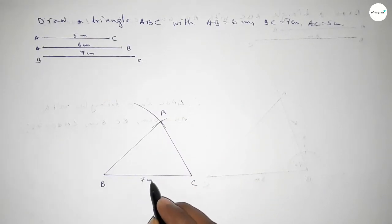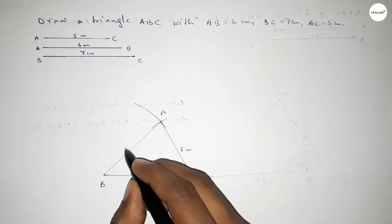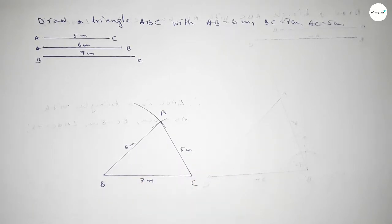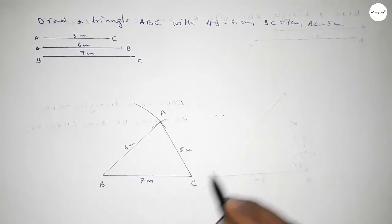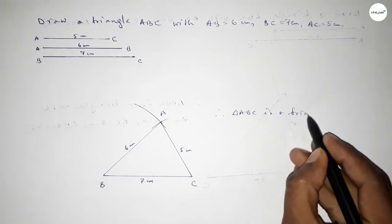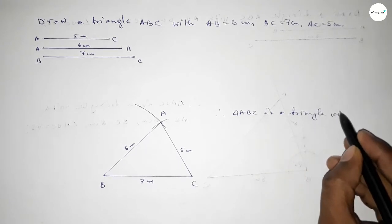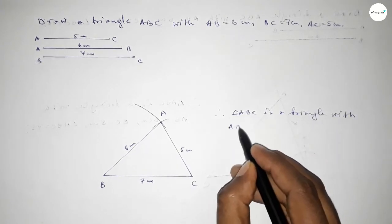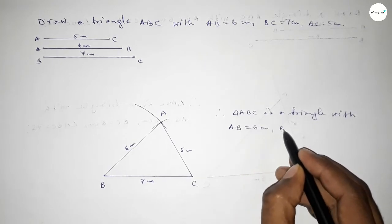So BC is 7 centimeter, this is 7 centimeter, this is 5 centimeter, and this one 6 centimeter. So therefore triangle ABC is a triangle with AB equal to 6 centimeter, BC equal to 7 centimeter, and AC equal to 5 centimeter.